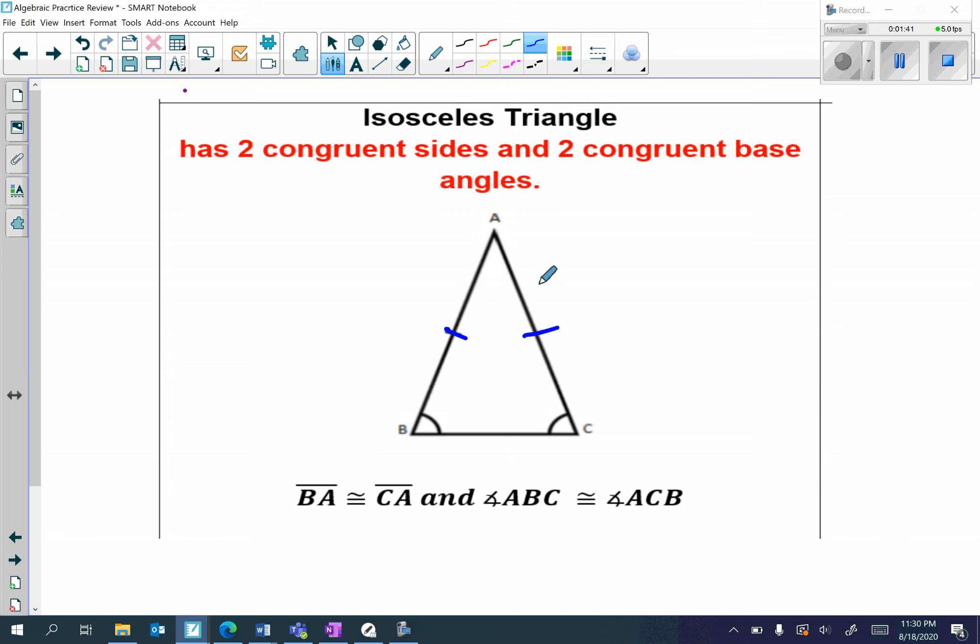And I have the congruent base angles. So, angle ABC is congruent to angle ACB. And again, I can label these 1 and 2. Angle 1 is congruent to angle 2. So, in an isosceles triangle, the two sides are congruent and the base angles are congruent.